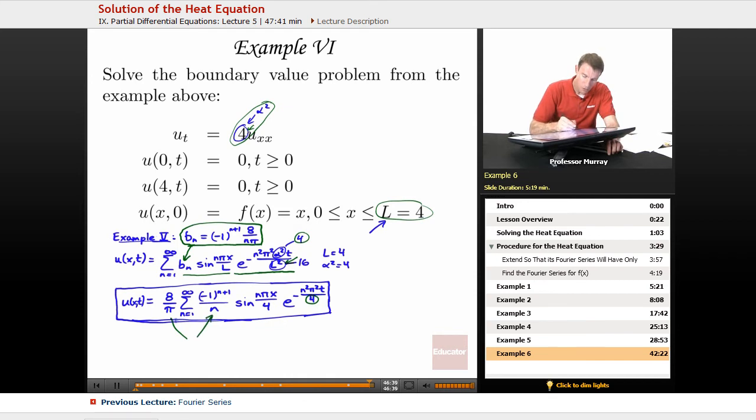Those terms are both coming from bn, and I factored out the 8 over pi because that didn't depend on n. Here I plugged in l is equal to 4. And here I plugged in alpha squared is 4 and l squared is 16. So that's our complete solution to that partial differential equation and the boundary value problem.